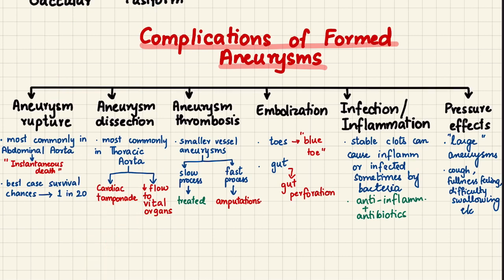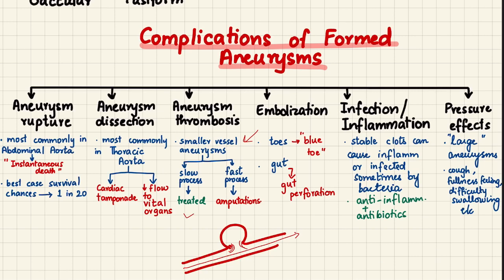The next complication is aneurysm thrombosis. Normally blood flow should be laminar to prevent thrombosis, but the aneurysm causes turbulence at its edges, making those areas subject to coagulation. This chiefly occurs in small vessel aneurysms — if it is a slow process it can be treated, but if fast, it can lead to severe gangrene requiring amputation. The resulting thrombus can also embolize into the toes, causing blue toe syndrome and gut perforation.